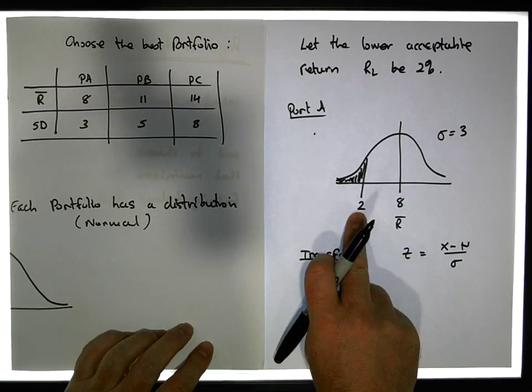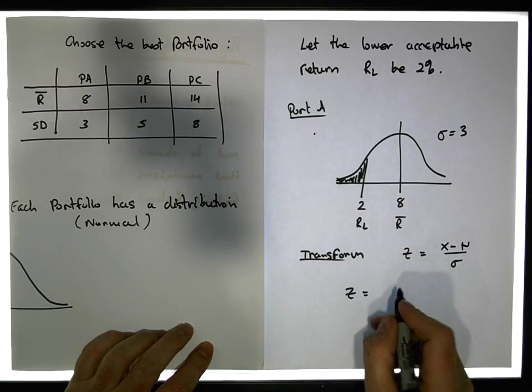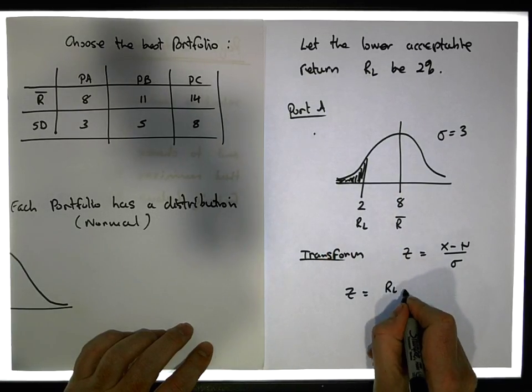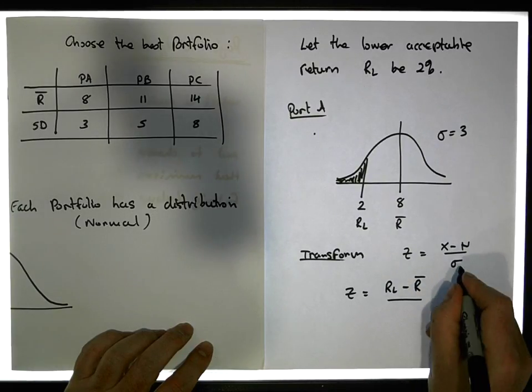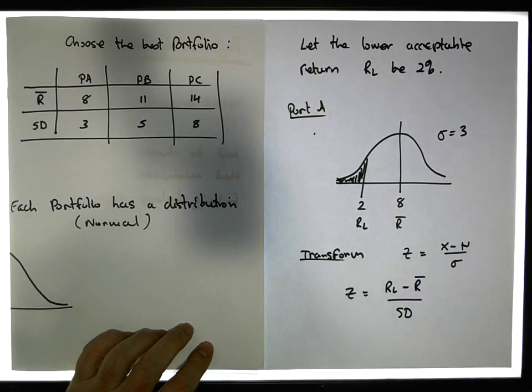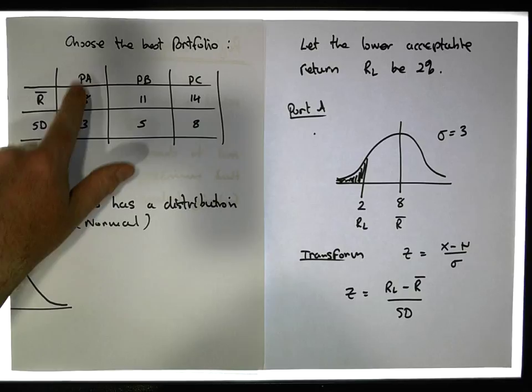And X is this return level. This is what I want to find the Z score for 2. So it's actually going to be RL minus R bar over sigma, which is the standard deviation of the portfolio.